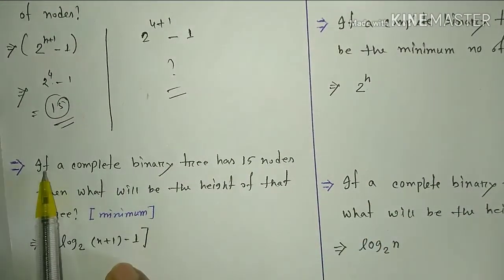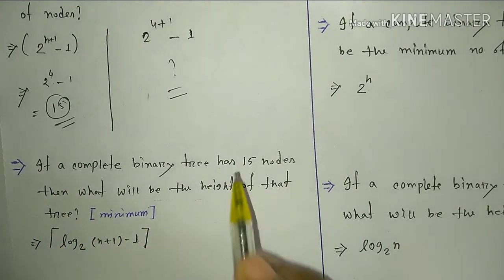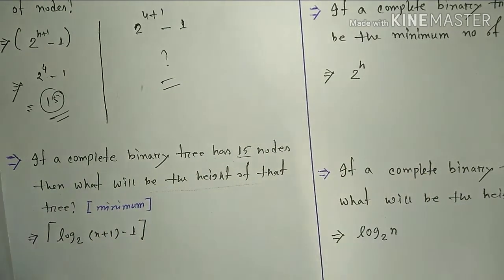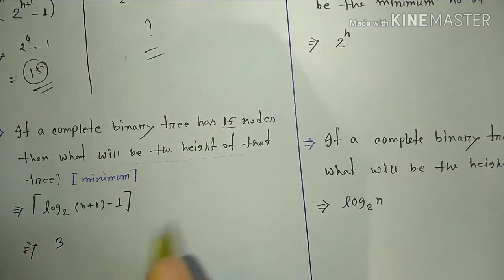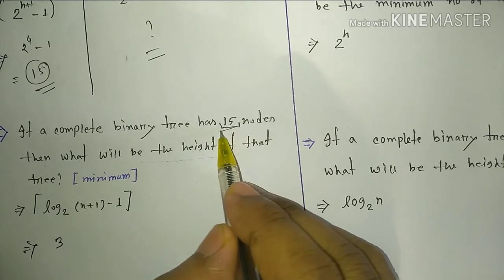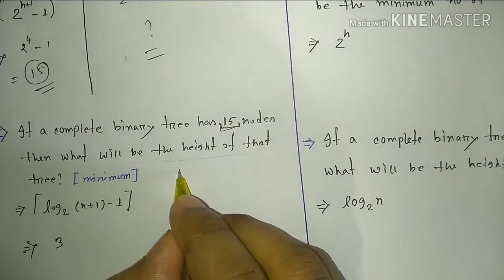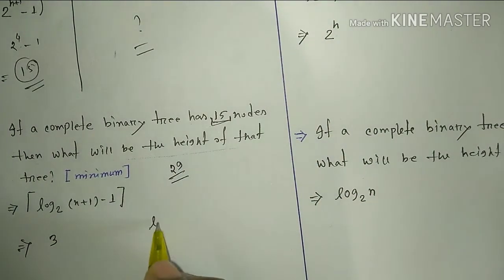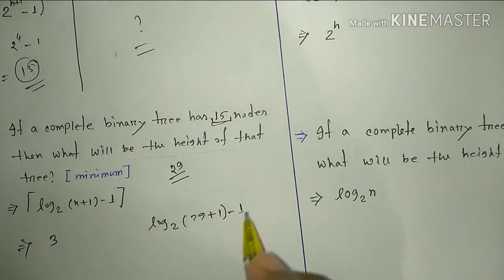Next question: if a complete binary tree has 15 nodes, then what will be the height of that tree? We use the log formula: ceiling of log base 2 of (29 plus 1) minus 1.